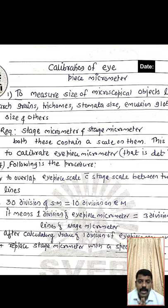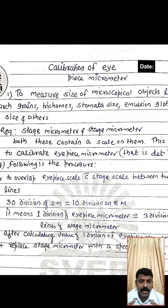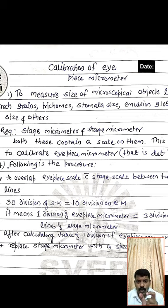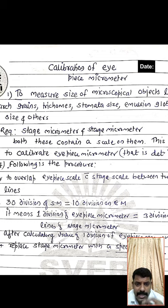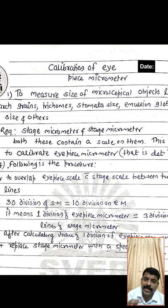Now you remove the stage micrometer and place a specimen slide — containing epidermal cells, oil globules, trichomes, or emulsion globules. Suppose there is one emulsion globule or one trichome on the specimen slide, and it is covering three lines of the eyepiece micrometer.